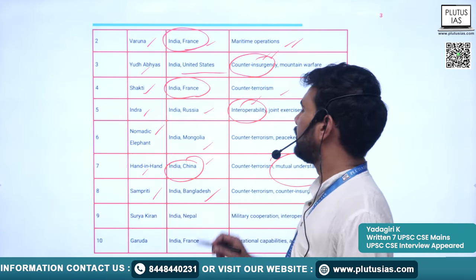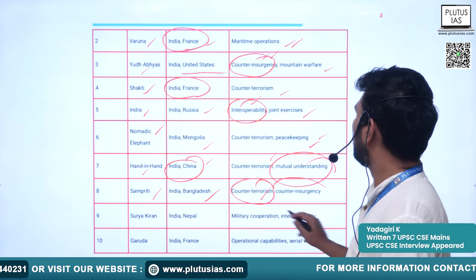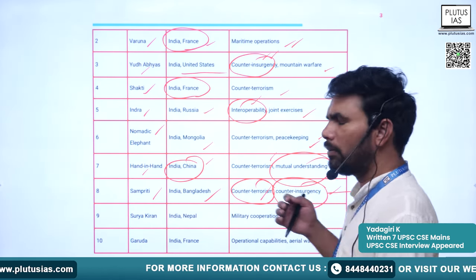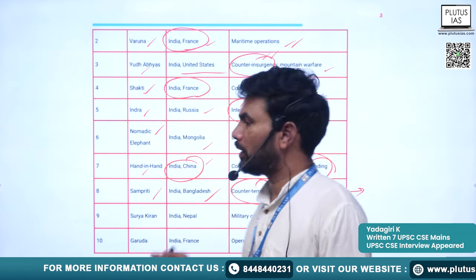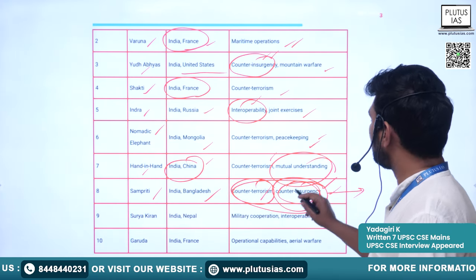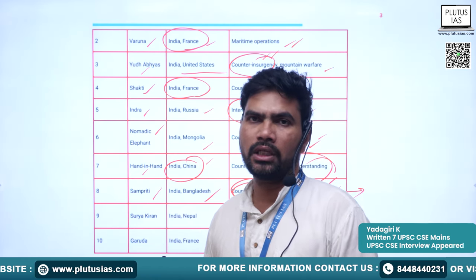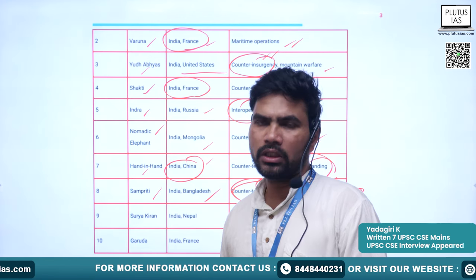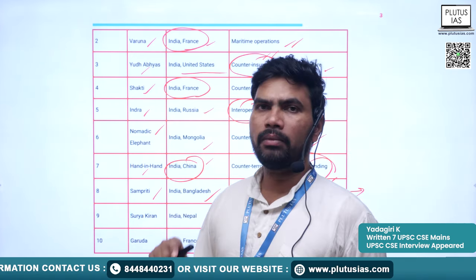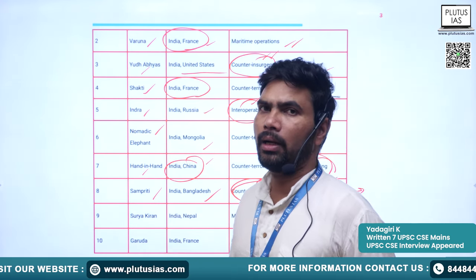Hand in Hand is between India and China, with thematic areas of counterterrorism and mutual understanding. Next is Sampreeti, between India and Bangladesh, focusing on counterterrorism and counterinsurgency. The exercises are country-specific — with India and Bangladesh, counterinsurgency is a major problem, as many insurgent elements from Northeastern India often take shelter in Bangladesh. Keeping that in mind, counterinsurgency exercises are conducted between India and Bangladesh.